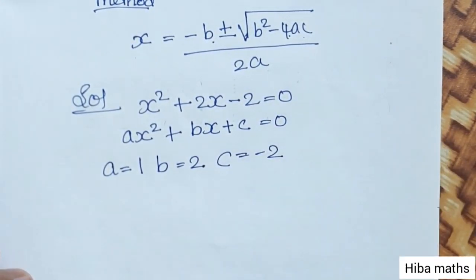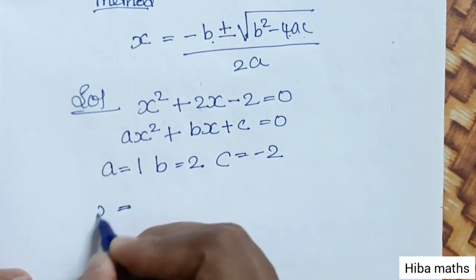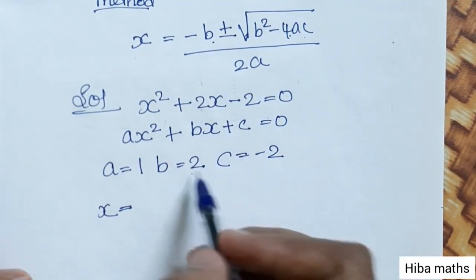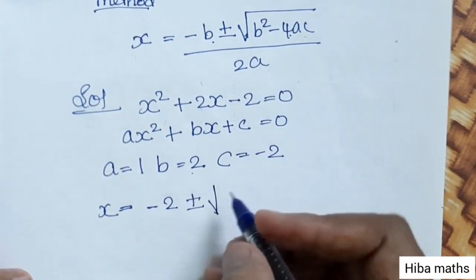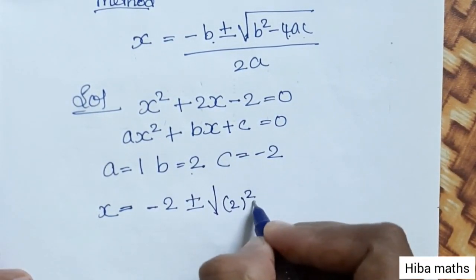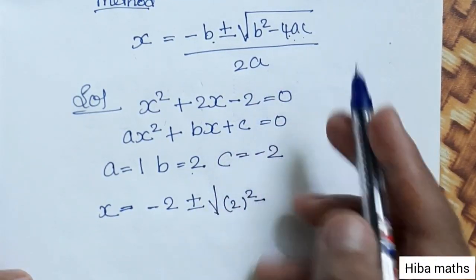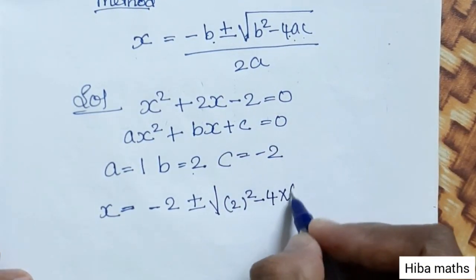Now we will substitute in the formula. Therefore, x equals minus b, b is 2, plus or minus root of b square, 2 square minus 4 into a into c, 4 into 1.